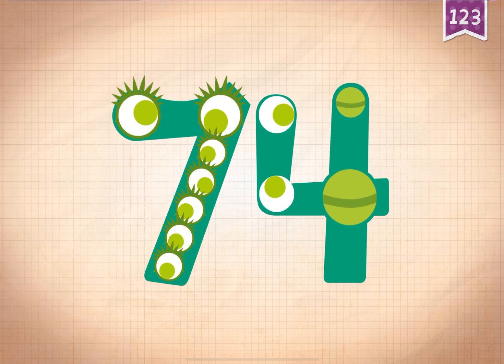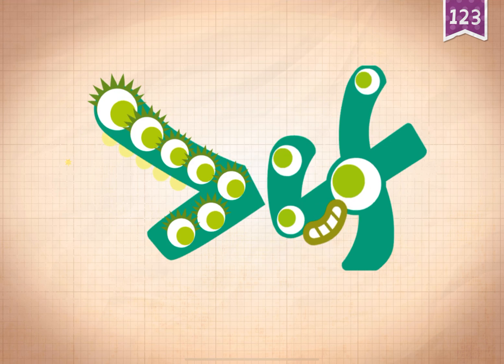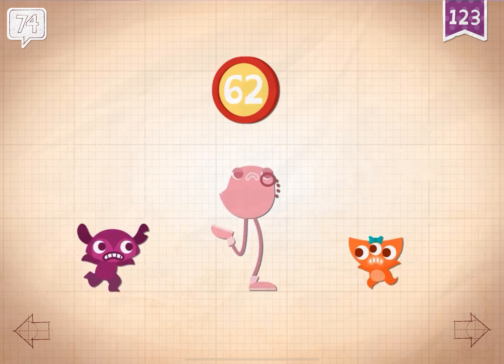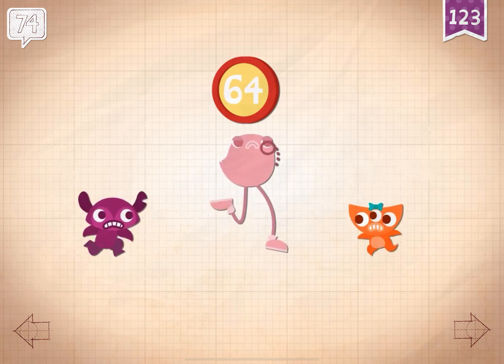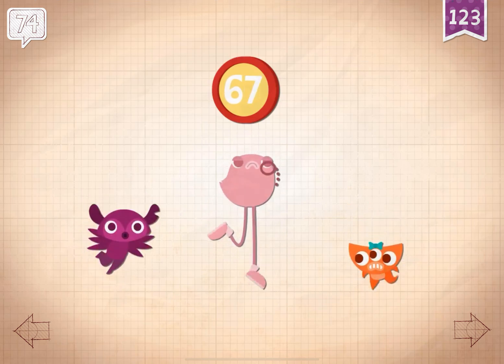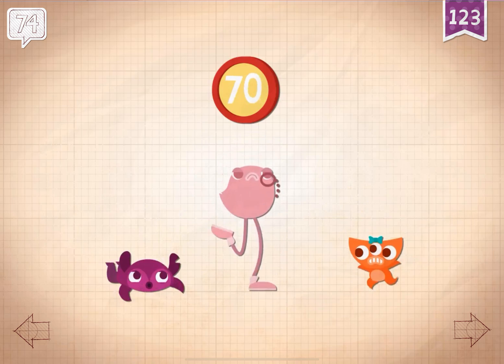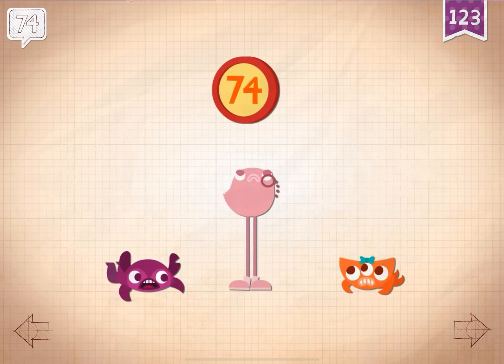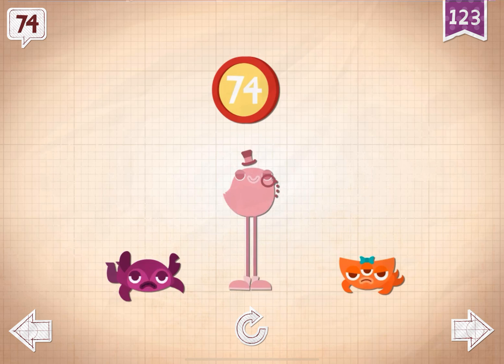Seventy-one, seventy-two, seventy-three, seventy-four! Dapper Dandy won the contest by hopping on one foot seventy-four times.